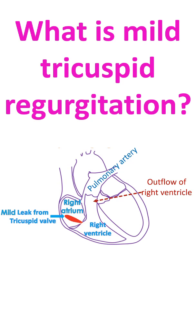If the leak occurs as a result of increased pressure in the right ventricle, the cause of that increase in pressure has to be checked. It could be an obstruction to the outflow of the right ventricle, or increased pressure in the blood vessels of the lungs. Both of these are significant conditions which need treatment.